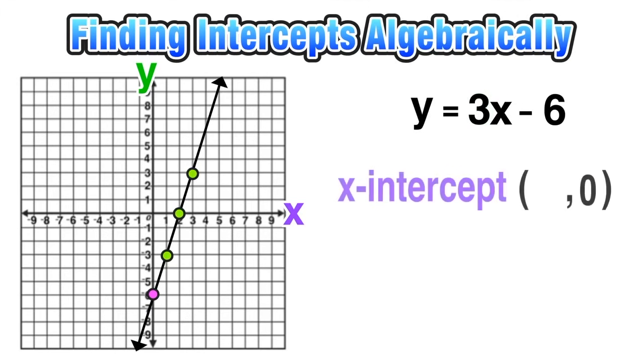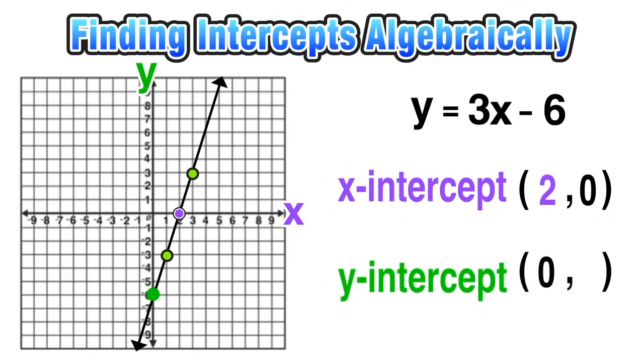Based on my graph, we can see that our x-intercept is at (2, 0)—that's where the graph hits the x-axis—and our y-intercept will be at (0, -6), since that's where the function crosses the y-axis.